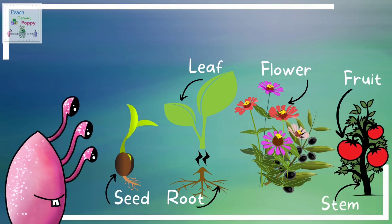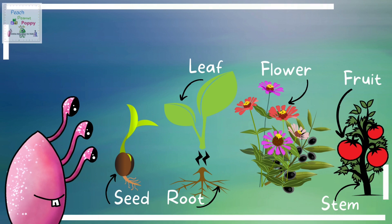If you look at this picture, the first one is that of the seed. Can you see the tiny plant growing out of the seed? The second picture shows you the leaves at the top and the roots at the bottom. The third picture shows you the flowers, and the fourth one shows the fruit and the stem.